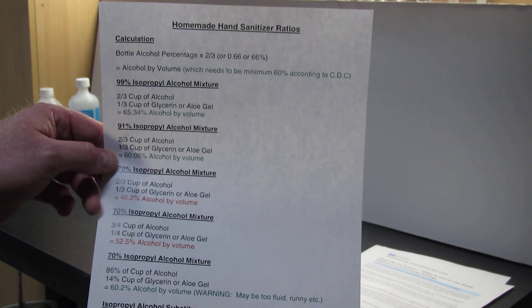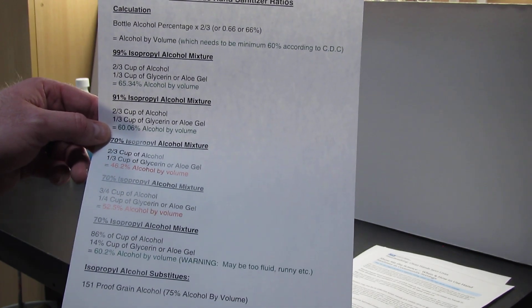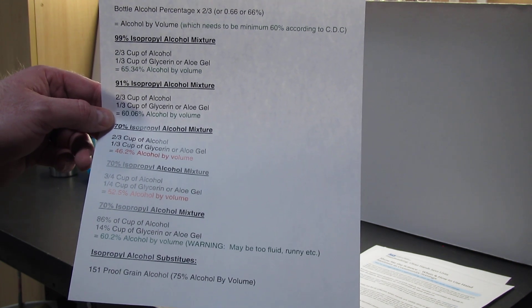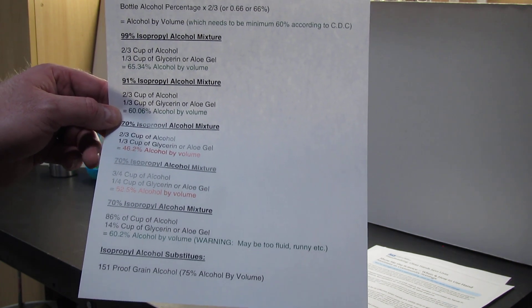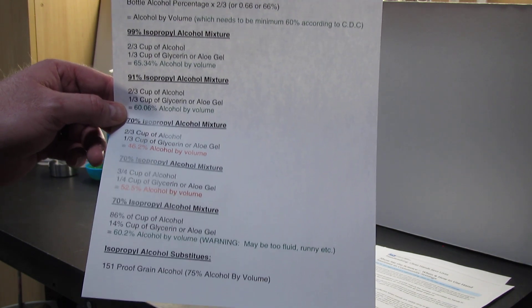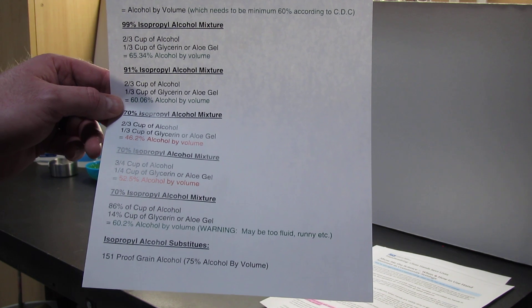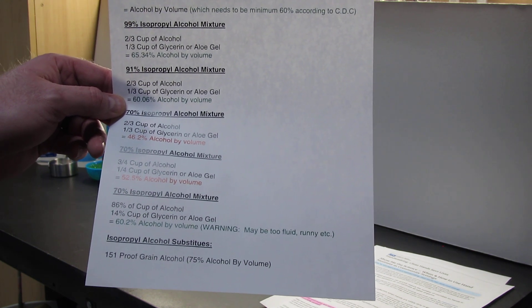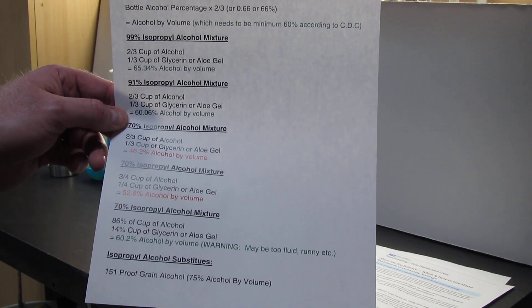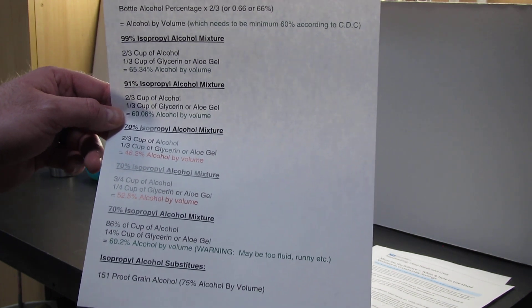So you can see in my first example, we've got 99% isopropyl alcohol. If you were to take two-thirds of that alcohol and a third cup of either glycerin or aloe gel or afterburn, the total content or alcohol by volume in the end of that hand sanitizer will be 65.34%.